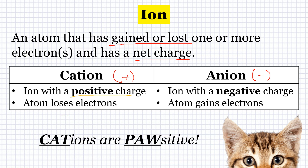Here's an example. Let's say I had three negative charges and three positive charges. If I were to lose a negative charge — I lost an electron — now there are more protons than electrons. So the positive side would win. Cations are positive because they're losing electrons.